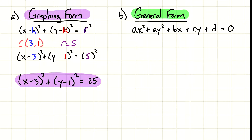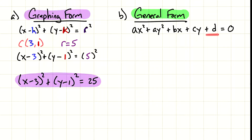In order to understand that, we need to see if we could turn graphing form into general form and maybe learn from that. The general form has ax squared plus ay squared first, then bx and cy, then plus d. In this case the a's would be the same, but a, b, c, and d all represent numbers.